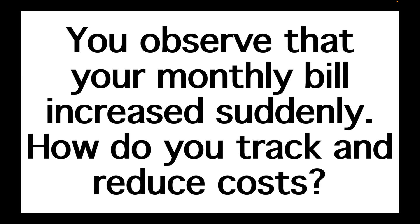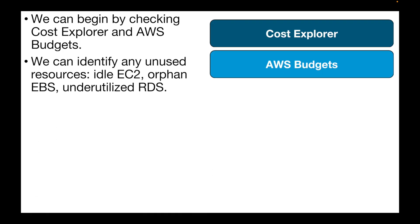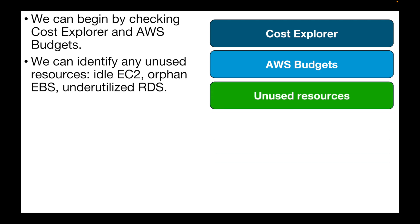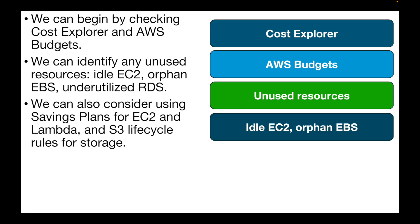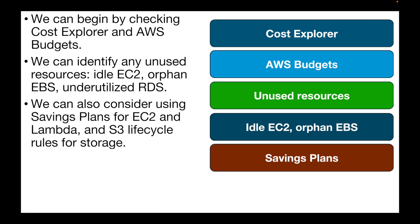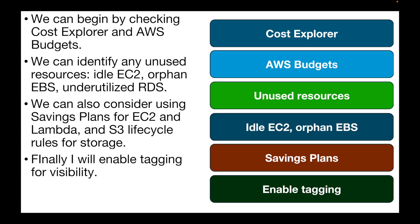The next question is: you observe that your monthly bill increased suddenly. How can you track and reduce the cost? Begin by checking Cost Explorer and AWS Budgets to identify unused resources like idle EC2 instances, orphaned EBS volumes, or underutilized RDS instances. Consider using Savings Plans for EC2 and Lambda, and S3 lifecycle rules for storage. Finally, enable resource tagging for visibility, which makes it easier to view cost reports in Cost Explorer and AWS Budgets.